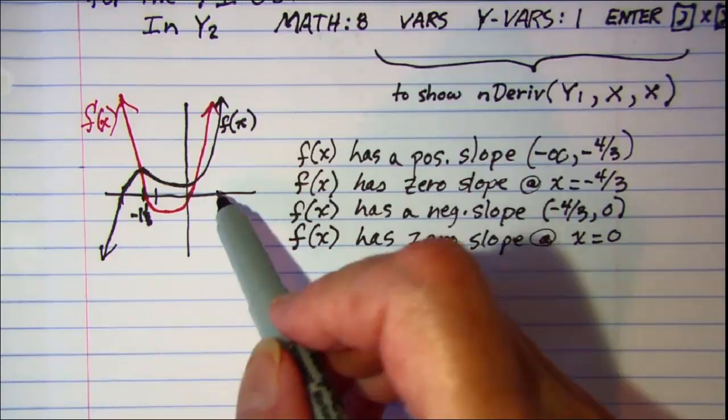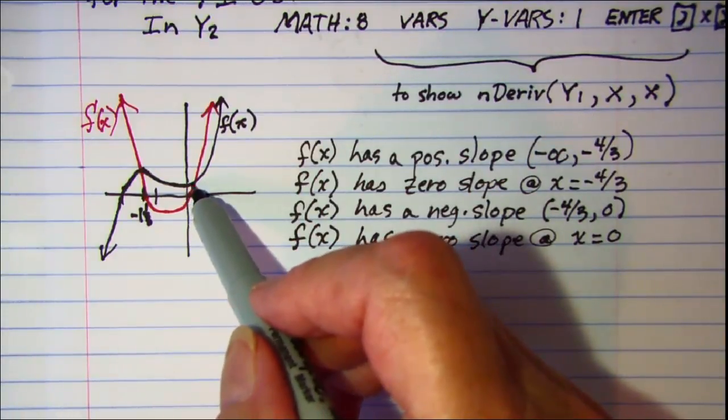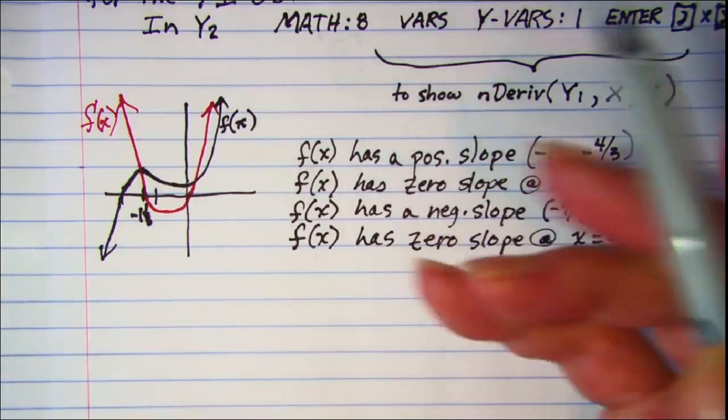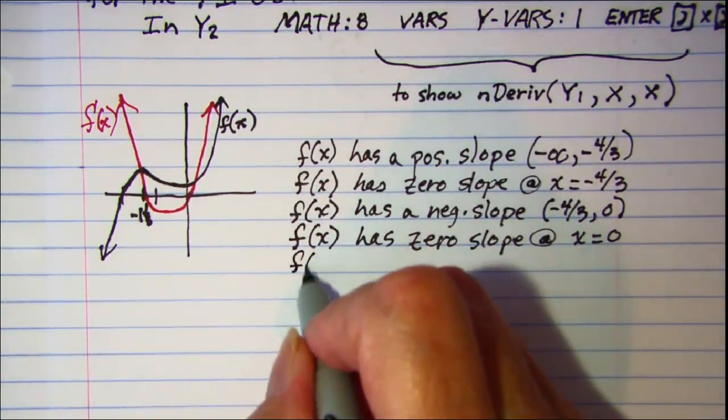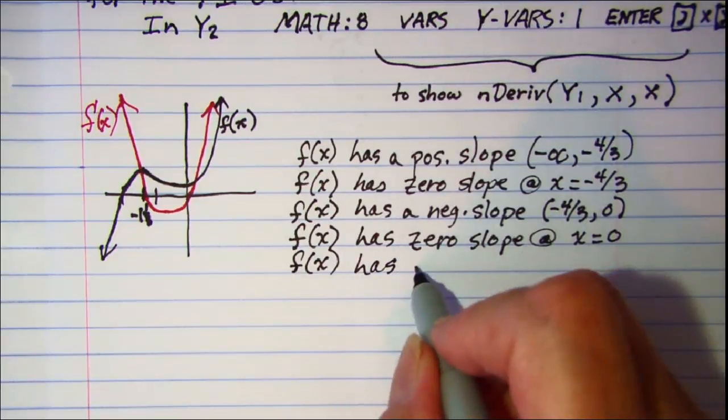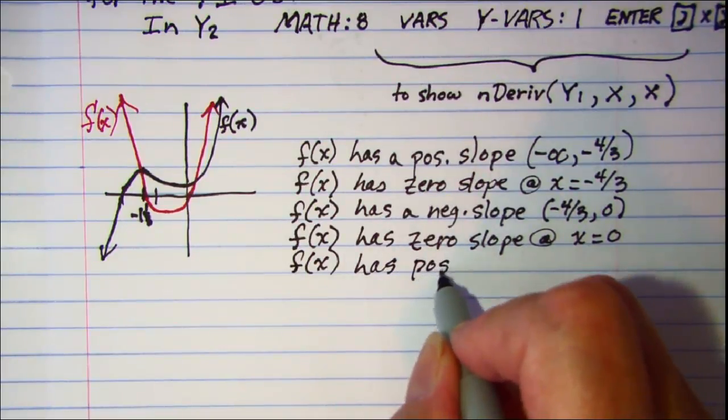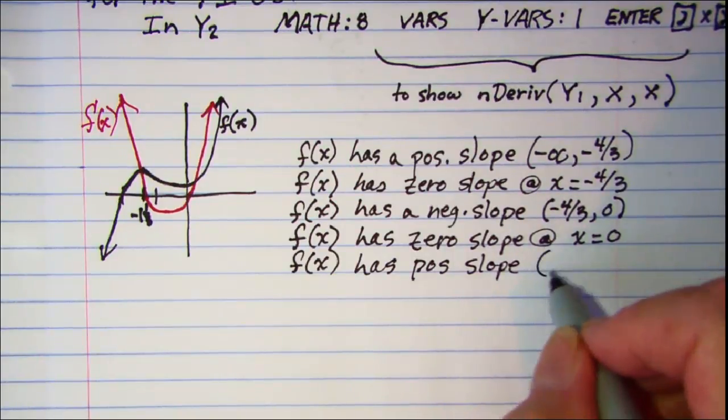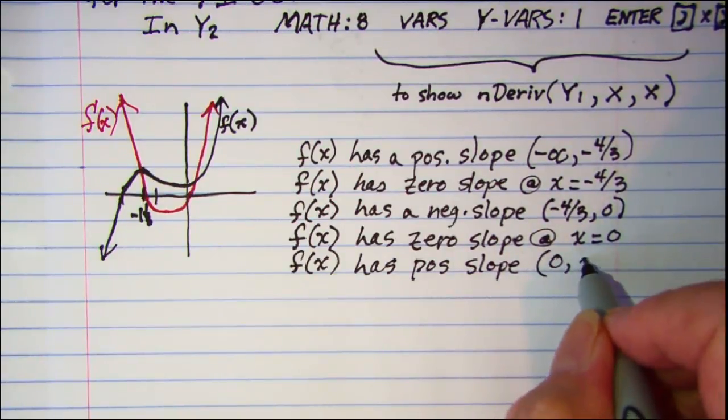And then past that, it seems to be heading uphill until we hit positive infinity. So f(x) has a positive slope on the interval from zero to positive infinity.